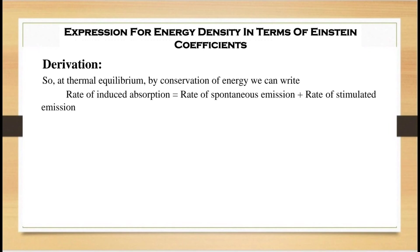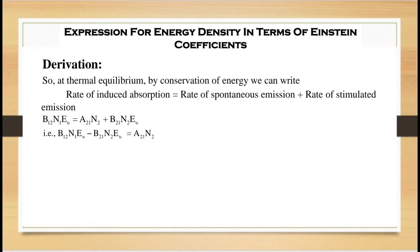At thermal equilibrium, by conservation of energy, the rate of induced absorption equals the rate of spontaneous emission plus the rate of stimulated emission: B12·N1·E_μ = A21·N2 + B21·N2·E_μ. Shifting B21·N2·E_μ to the left side gives B12·N1·E_μ − B21·N2·E_μ = A21·N2. Taking E_μ as common on the left-hand side: E_μ·(B12·N1 − B21·N2) = A21·N2.